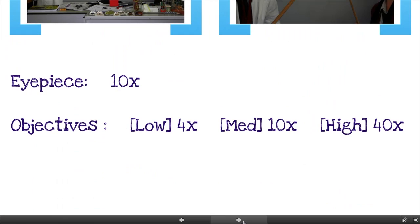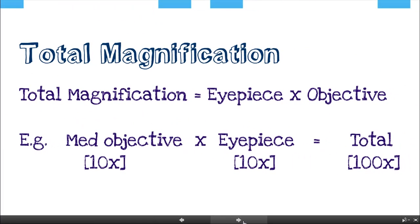So just before we move on, the eyepiece is ten times magnification. The objectives, the low is four times, medium ten times, high is forty times. And the low power objective is the shorter one, and the high power is the longer one. But they've usually got those values stamped on them too. To work out the total magnification, this should be easy stuff, you've probably done it as juniors.